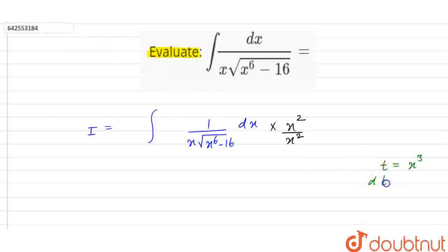We have dt from here will be equal to 3x square dx. From here x square dx will be equal to 1 by 3 dt here.